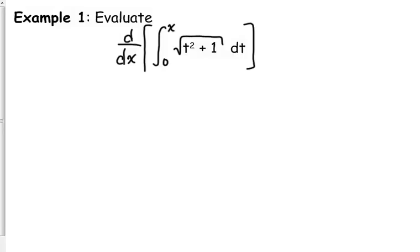So if we're asked to evaluate the derivative with respect to x of the integral from 0 to x of the square root of t squared plus 1 dt. Now remember I pointed this out yesterday, your variables have to be different. We've got t's in the function, so our limit has the x. Those can't be the same variables.